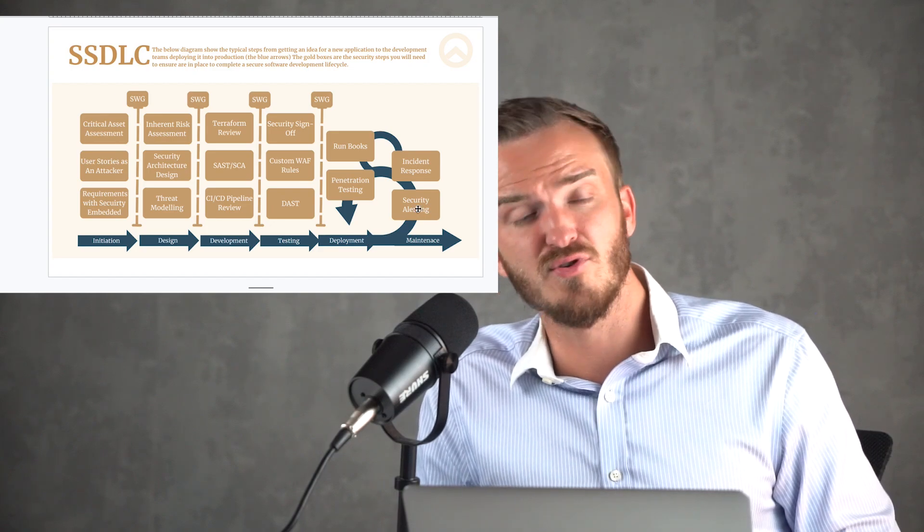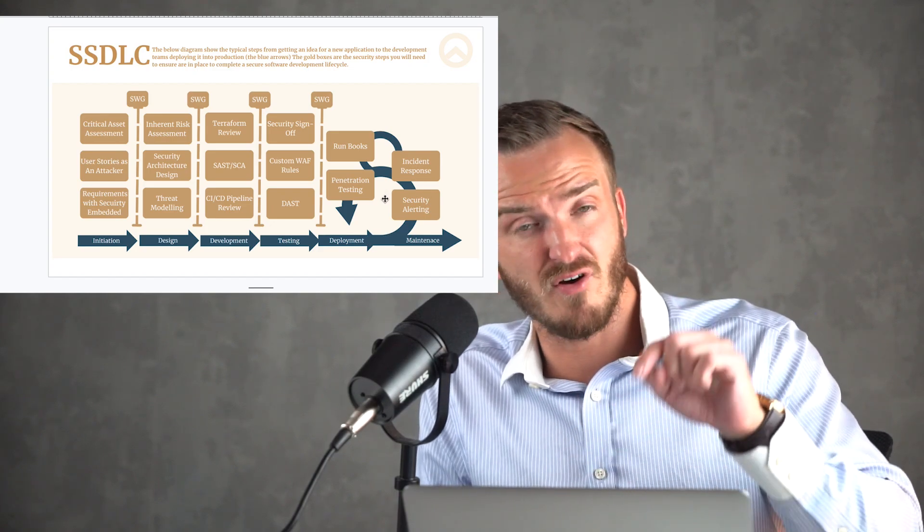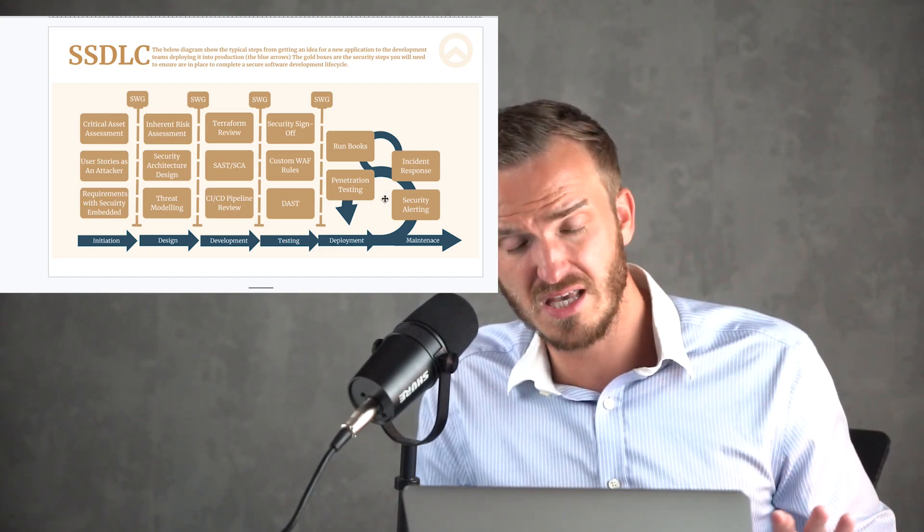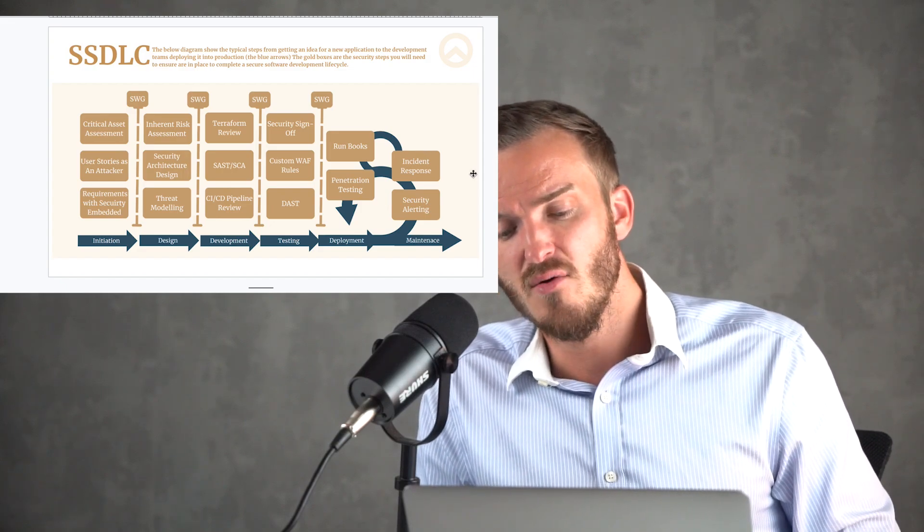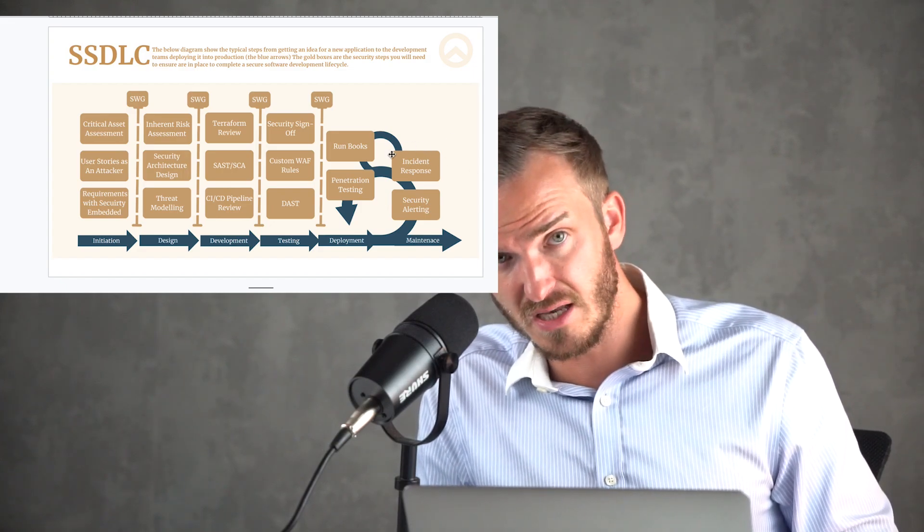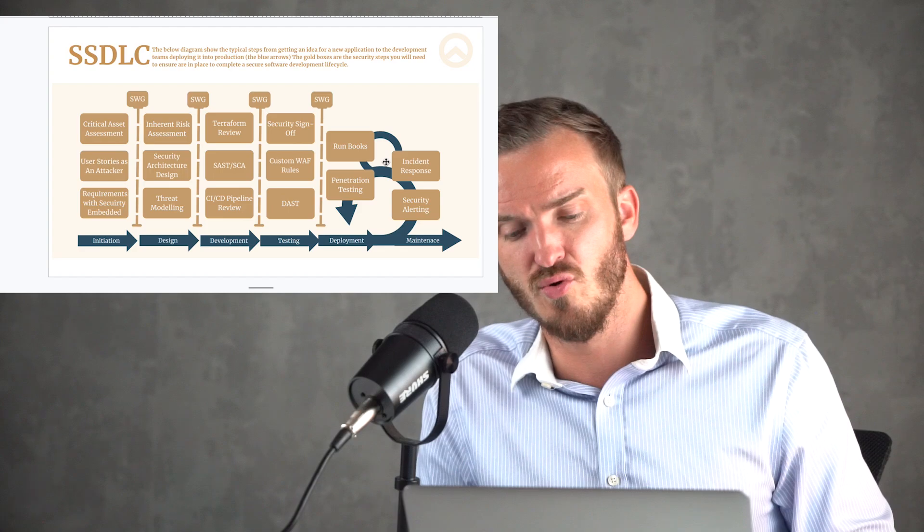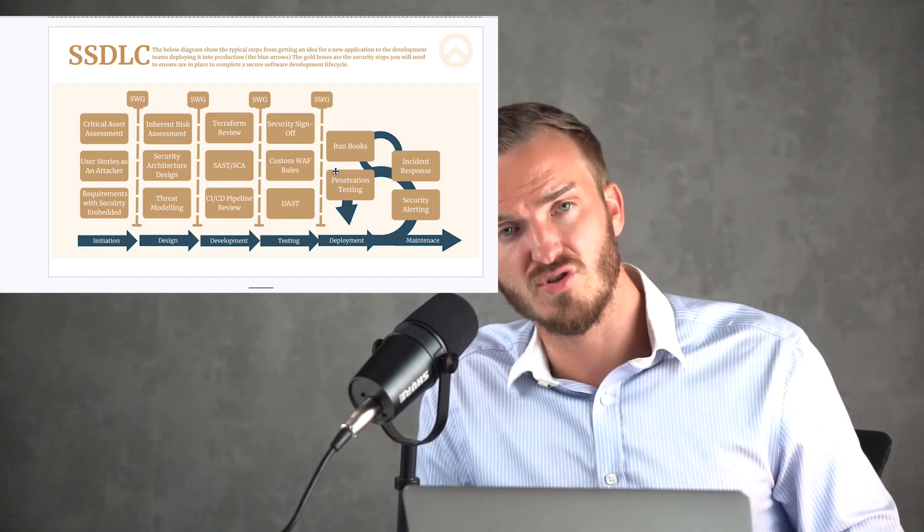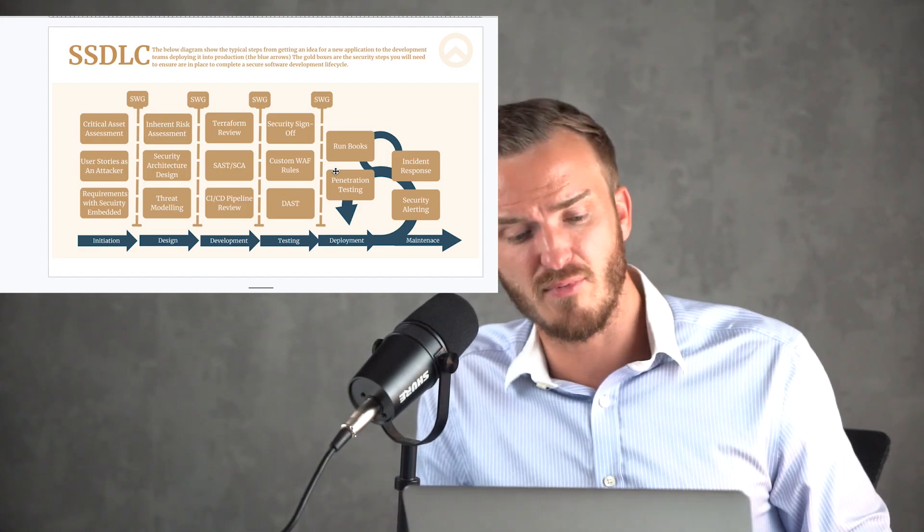Then we go into the deployment phase. We put security alerting in place via Slack, via JIRA, PagerDuty, whatever tools the team are using, make sure you get them to the engineers. We build out incident response process, which I'm going to cover in the next module, and then we'll create runbooks, which are dedicated scenarios that could happen from the threat modeling.